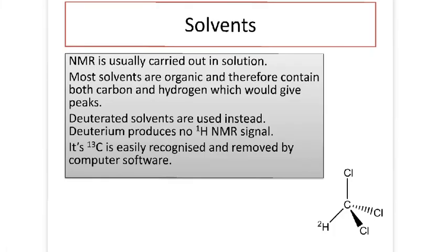That's enough about the actual spectra until you watch the next video. A quick word about solvents: NMR is normally carried out in solution, but this gives us a problem because most solvents are organic and therefore they've got both carbon and hydrogen, and these would obviously give peaks. Because there's much more of the solution than your sample, they'd swamp it and you'd see a very nice NMR spectra for the solvent but you wouldn't be able to see your sample. To solve this, we use deuterated solvents. Deuterium is hydrogen-2, so it's got an extra neutron.